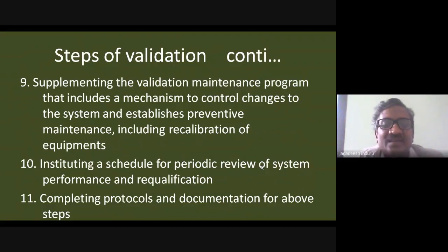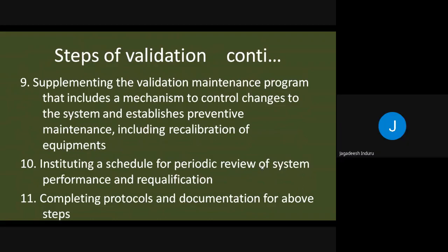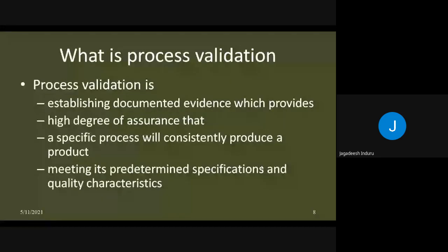Maintenance procedures previously studied cover four types of maintenance — you need a supplementary document here. A scheduled periodic review system for re-qualification is instituted, and all protocols and documentation for the above steps must be completed. Once IQ, OQ, PQ, maintenance procedures, and SOPs are ready, and GMP-critical quality attributes, action limits, and alert limits are all defined, you proceed to validation.